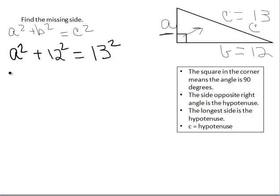And again, I can tell I may be working toward a quadratic equation, but let's see what happens. So I'm going to simplify. 12 squared is 144, and 13 squared is 169.